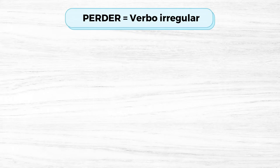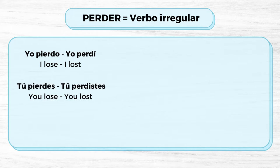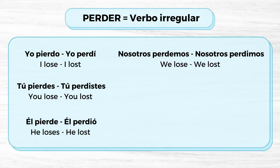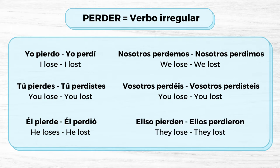The first thing you need to know is that perder is an irregular verb, so we will learn how to conjugate it correctly. Yo pierdo, yo perdí. Tú pierdes, tú perdiste. Él pierde, él perdió. Nosotros perdemos, nosotros perdimos. Vosotros perdéis, vosotros perdisteis. Ellos pierden, ellos perdieron.